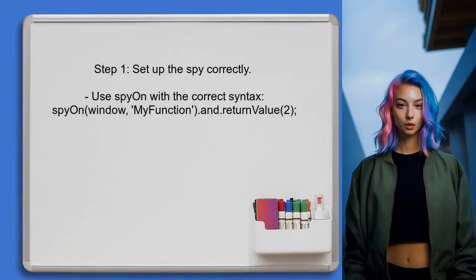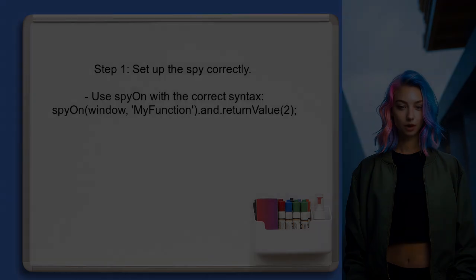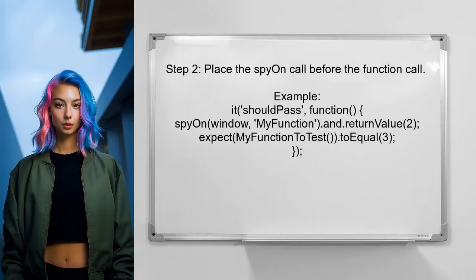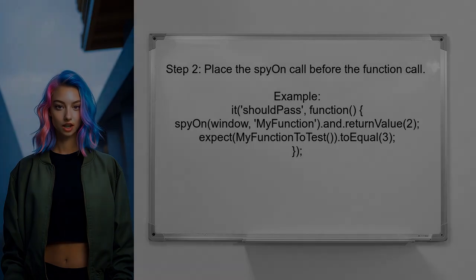To begin solving this issue, the user needs to correctly set up the spy on the global function. In Jasmine, the spyOn function requires the object and the method name as a string. Next, the user should ensure that the spy is set up before the function under test is called, meaning placing the spyOn call at the beginning of the test case.